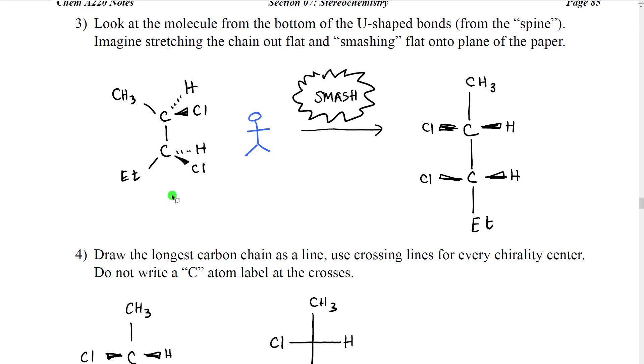Once we have that molecule oriented vertically, then what we're going to do is we're going to imagine looking at it from a particular direction and that direction is imagining that we are looking at it from in between these v's, the wedge and the dash of the bonds that are not part of the main parent chain.